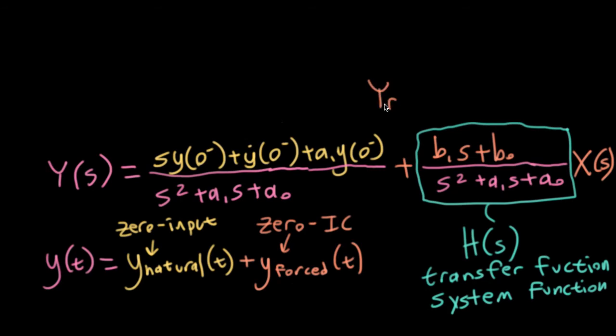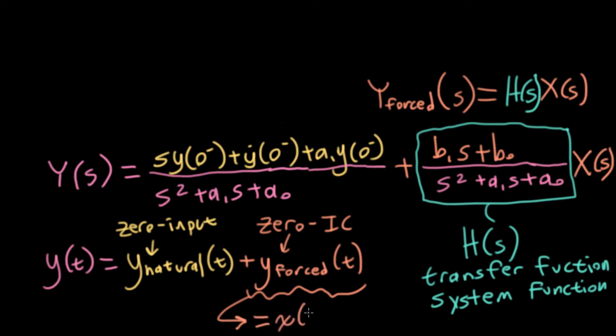So conveniently, the Laplace transform of the forced response, the way we've defined it, looks like the Laplace transform of the input times the transfer function. And remembering a convenient property of Laplace transforms, we can say that this forced response is equal to the input convolved with the impulse response. So big H of S, this transfer function or system function, whatever you want to call it, is the Laplace transform of the impulse response of the system.